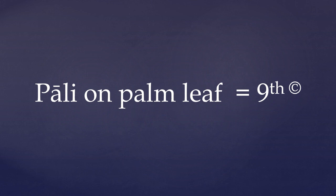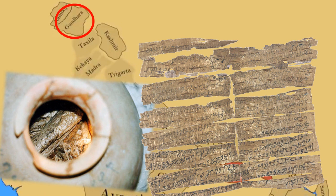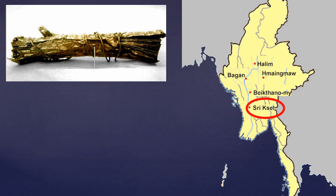The oldest Buddhist manuscripts we have were found in pots buried in the region of Gandhara. These were written on birch bark and miraculously date to the first half of the 1st century. But this incredible find is actually written in a Gandhari Prakrit and not Pali. The earliest archaeological evidence for the existence of Pali is actually not a palm leaf manuscript, but some inscriptions on gold plate which were found at Sisetra, one of the pyu city-states of ancient Burma, now Myanmar. These have become known as the golden Pali texts.